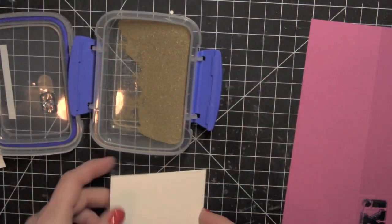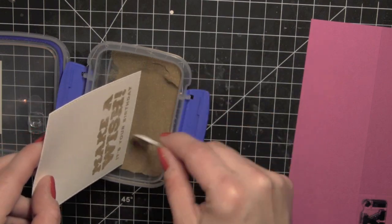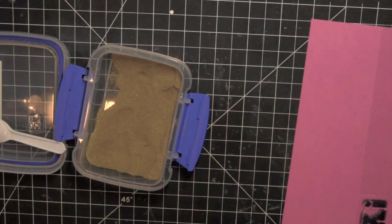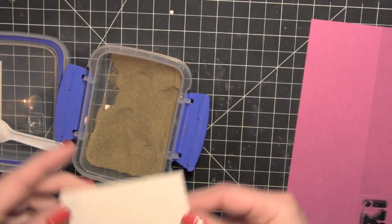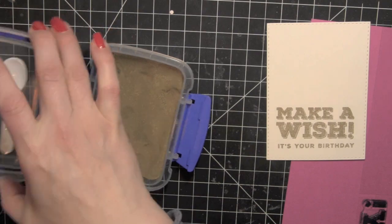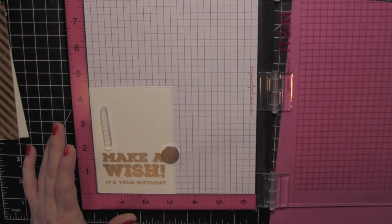I'm going to set that aside for just a second while I take some gold embossing powder and sprinkle that over the greetings. Now this was two separate greetings from the stamp set but you can see they're perfectly aligned. I'm going to heat emboss that. They're perfectly straight. That is the genius behind the Misti stamping tool.